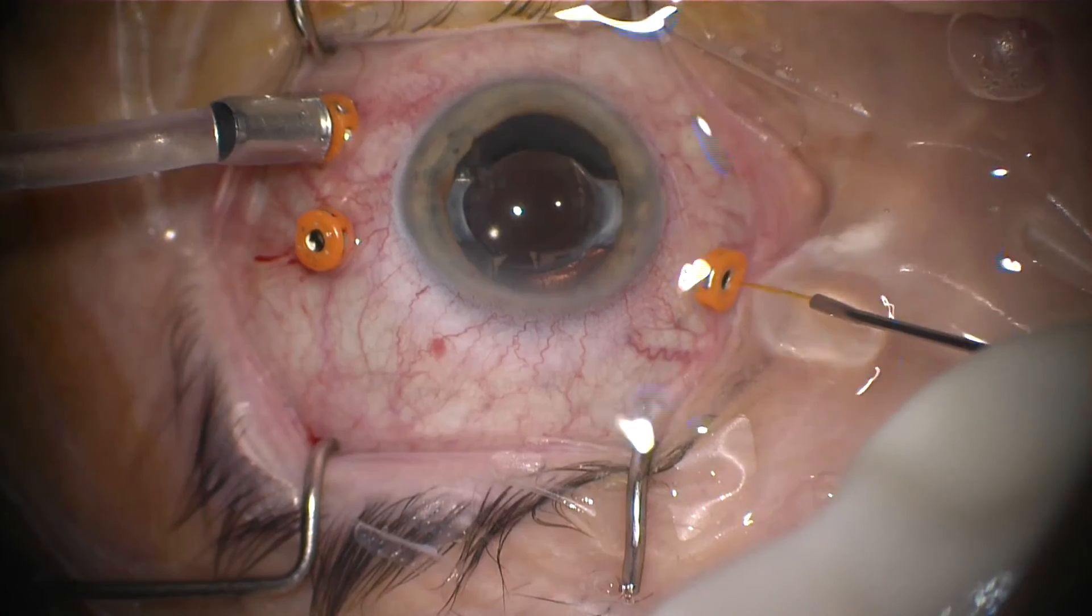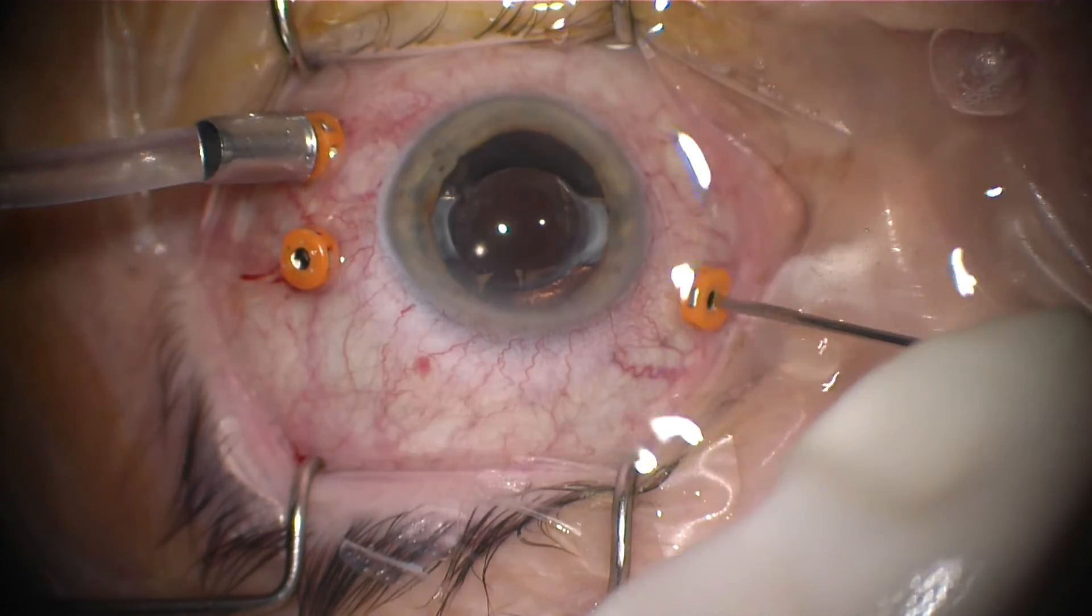This is the 41-gauge microcatheter system hooked onto the MedOne subretinal injection kit.